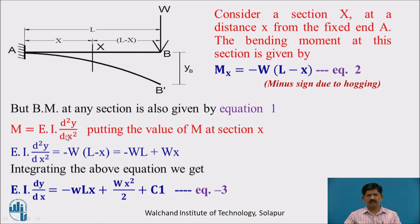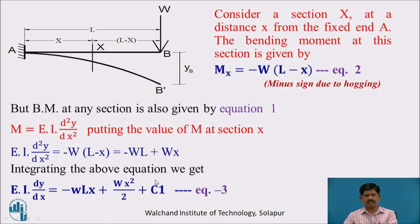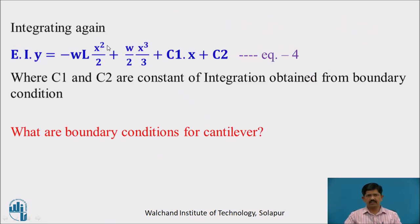Using M = EI·d²y/dx², we substitute the value of M to get: EI·d²y/dx² = −W(L − x) = −WL + Wx. Integrating: EI·dy/dx = −WLx + (W/2)x² + C₁ (Equation 3, where C₁ is the constant of integration). Integrating again: EI·y = −WL·x²/2 + (W/2)·x³/3 + C₁x + C₂ (Equation 4, where C₂ is another constant of integration).